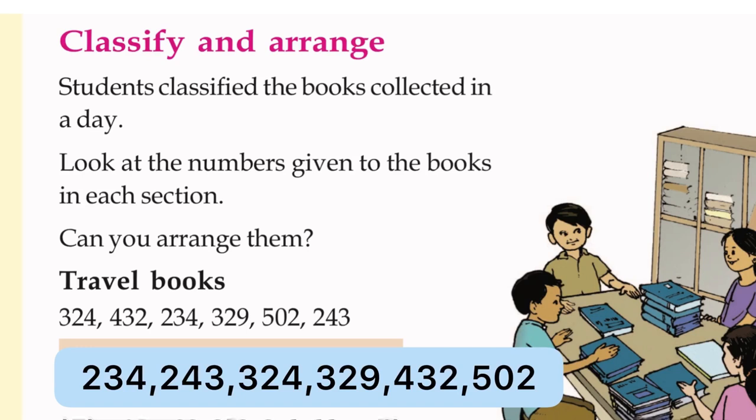234, 243, 324, 329, 432, and 502. This is the answer. So the smallest number comes first and the largest number comes last.